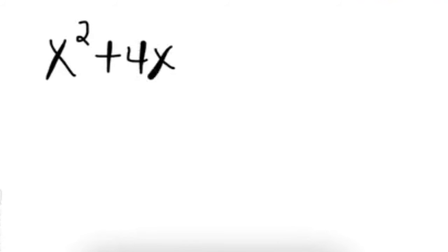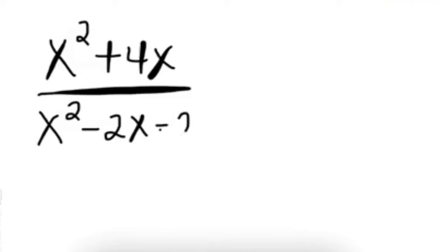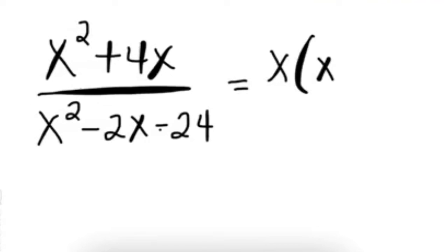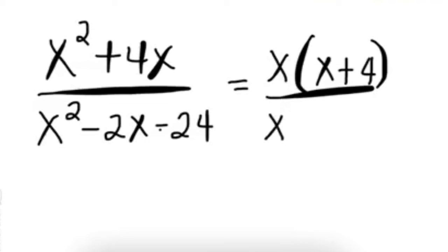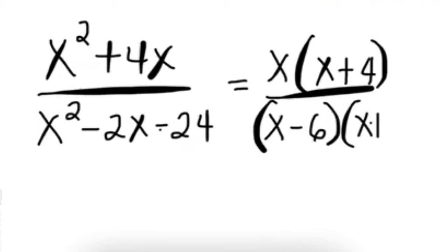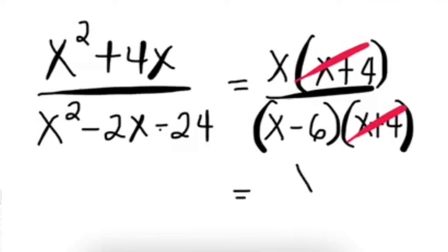Another example: simplify x squared plus 4x over x squared minus 2x minus 24. Use applicable factoring techniques. The GCF of the numerator x squared plus 4x is x, giving x times (x plus 4). Factor the denominator x squared minus 2x minus 24 into (x minus 6)(x plus 4). Cancel the common factor (x plus 4), and copy the remaining term: x over (x minus 6). That is your answer.